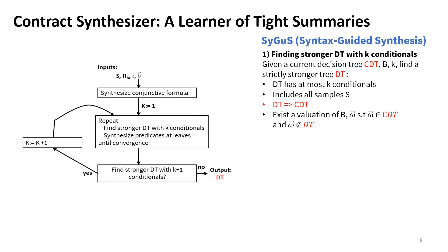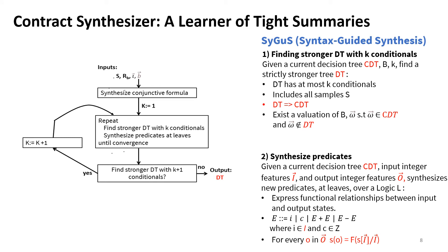This algorithm is parameterized over two synthesis subroutines that are formulated as SyGuS problems. SyGuS stands for syntax-guided synthesis, which is the problem of synthesizing expressions in a grammar that satisfies certain logical specifications. There are several SyGuS engines available, and we use CVC for SyGuS. The first SyGuS problem asks to construct a stronger decision tree with k conditionals given the current decision tree. We ask for a strictly stronger decision tree using logical arguments. The second routine is called to synthesize predicates to capture functional relationships between input and output states given a set of samples. The functions we synthesize are in a logic L of linear integer arithmetic.